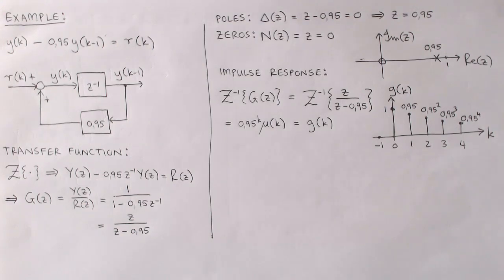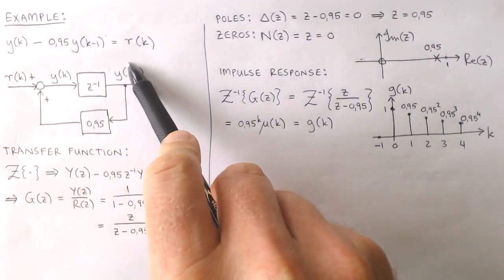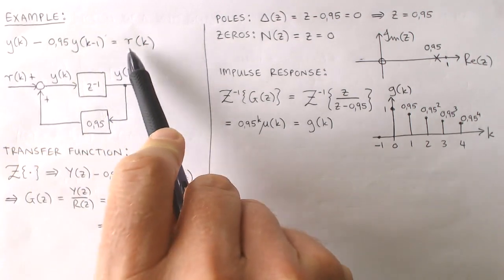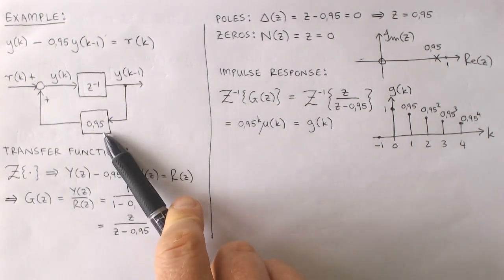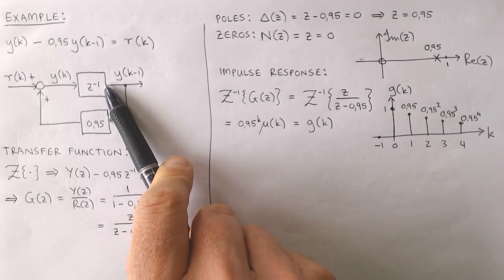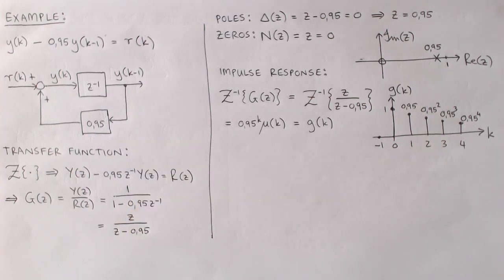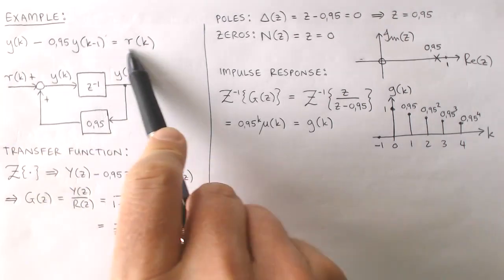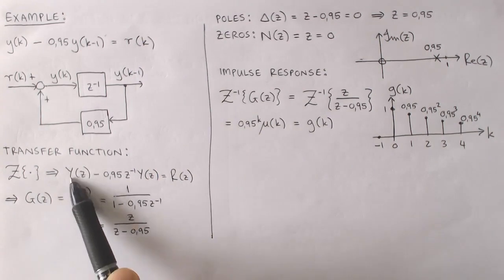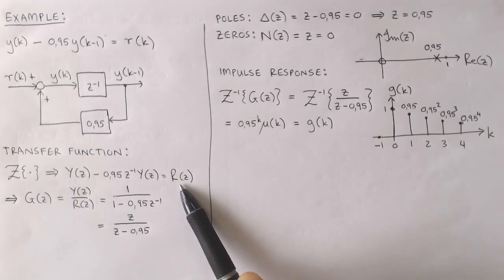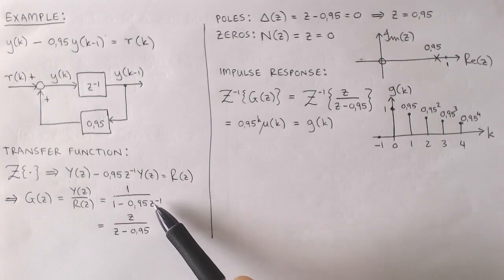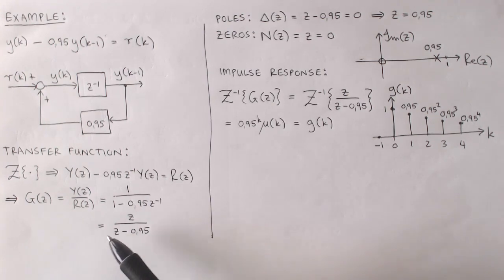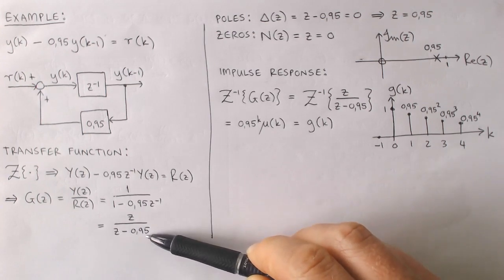Let's illustrate these concepts by working through a simple example. Suppose we have a system described by a given difference equation where y is the output and r is the input. From the difference equation we can draw a block diagram using z to the minus one as the delay block. Applying the z-transform and performing simple manipulation, we calculate the transfer function as the ratio of two first order polynomials.